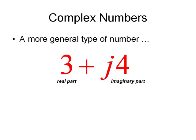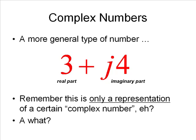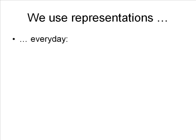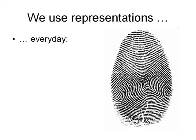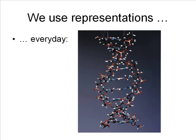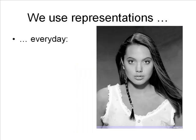What you see on your screen, 3 plus j4, is not a complex number — it is the representation of a complex number. Let's talk about representation and the difference with the objects they represent. We use representations daily. For instance, for a cop, a photo may represent a subject, but that is not the subject. For someone in a government office, a number represents a person, but that is not a person. And for a researcher, a picture represents a person, but that is not a person — it's only a representation.